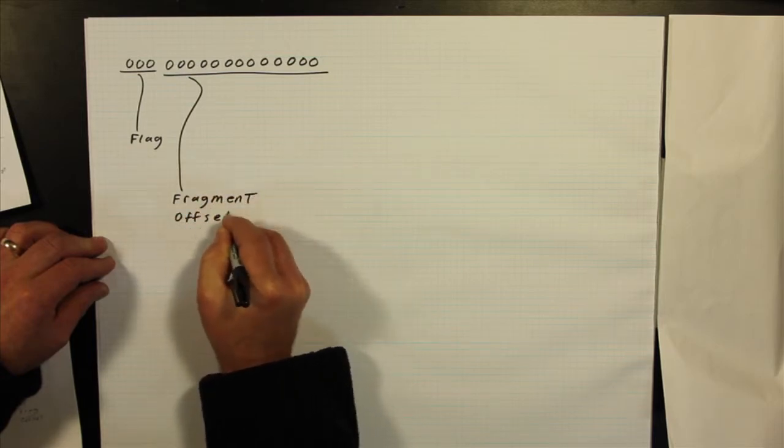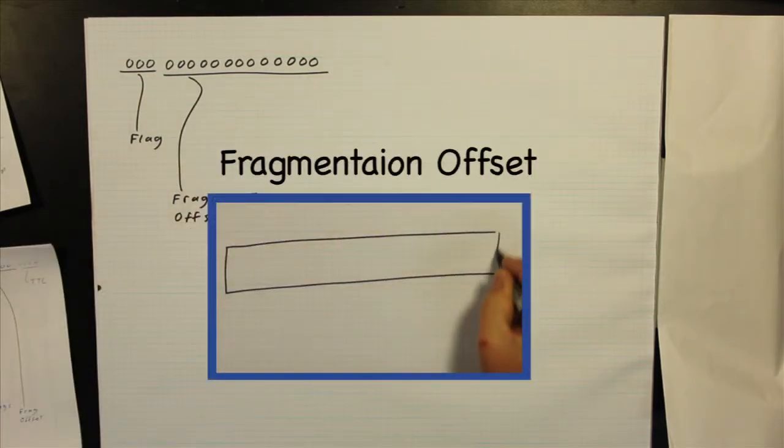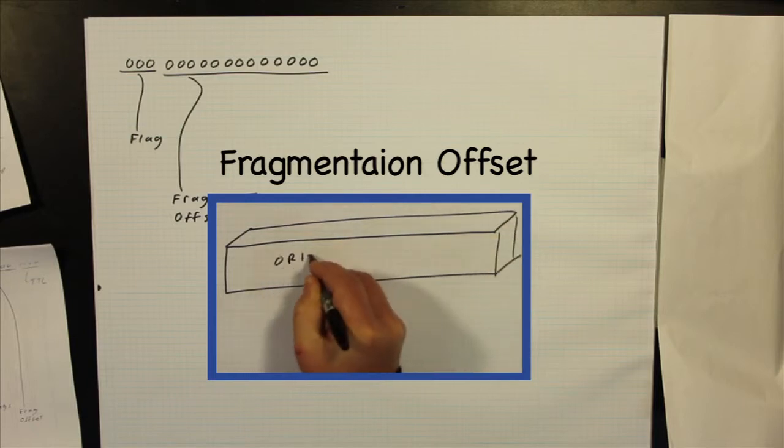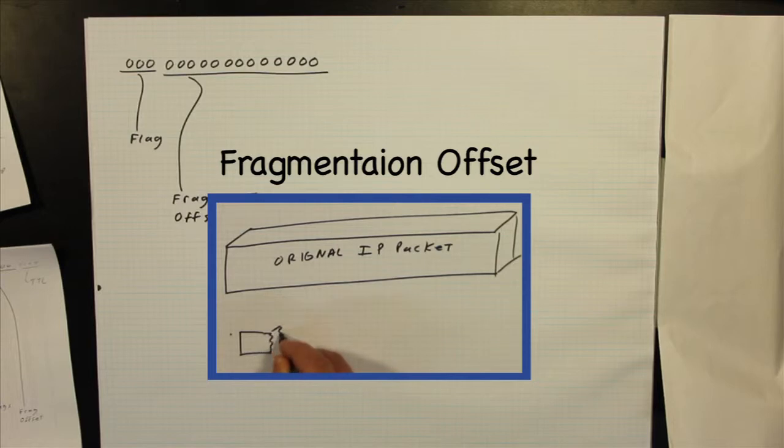When an IP packet is fragmented, the next 13 bits indicate the distance, in 8-bit words, this packet is offset from the beginning of the original, unfragmented packet.